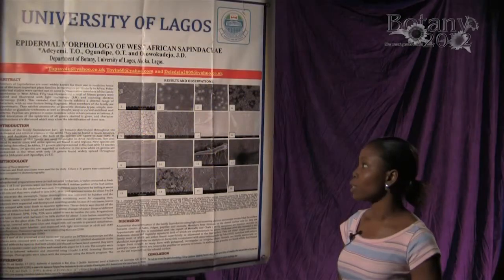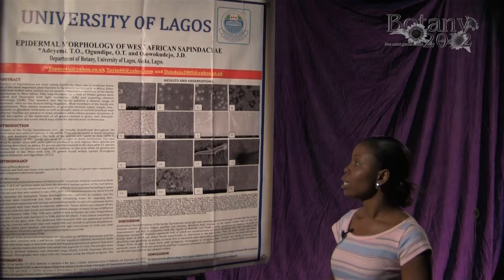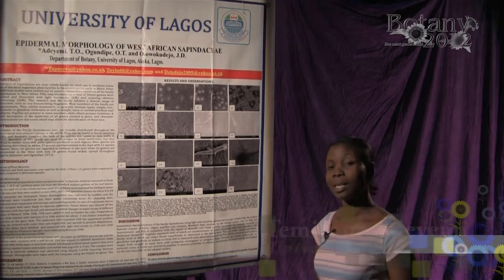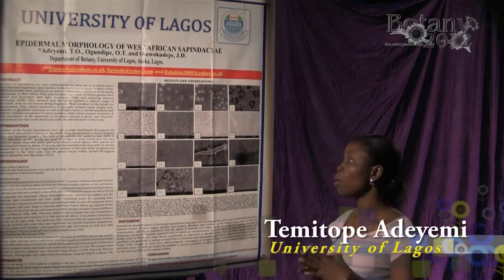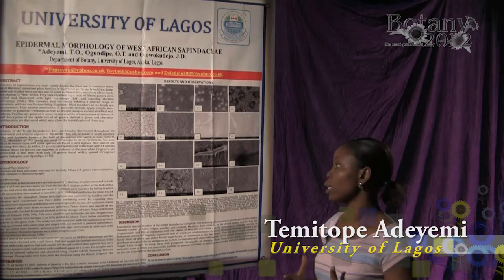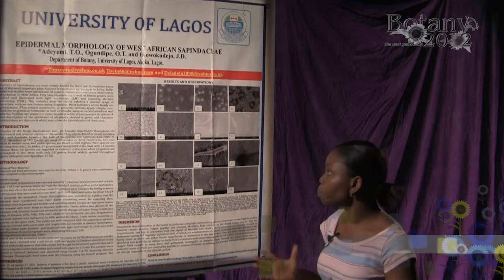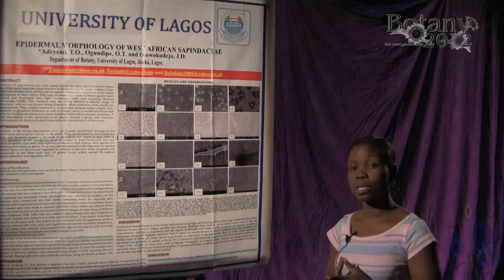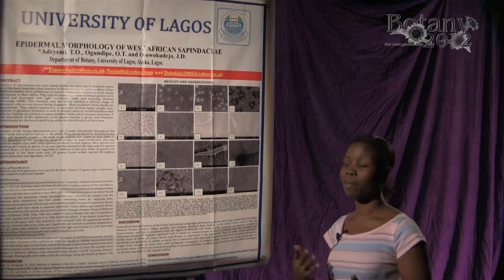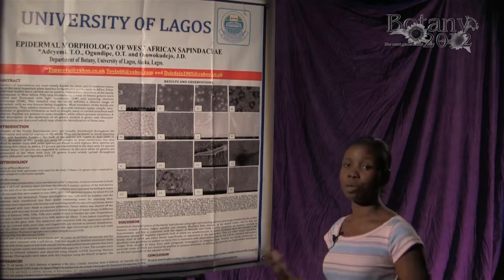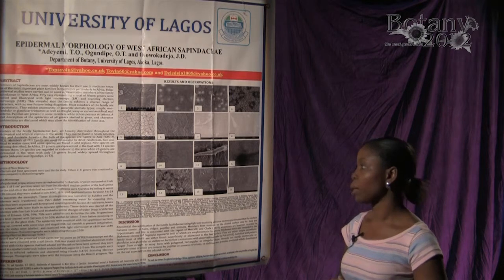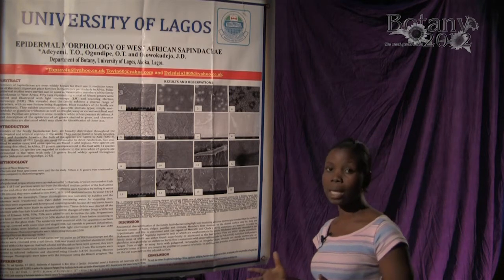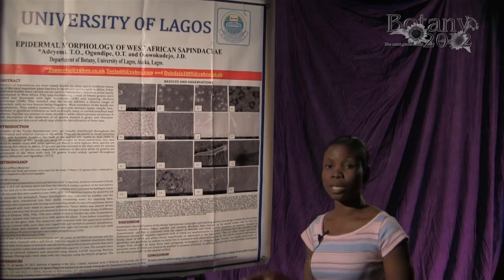I'm here to present Epidermal Morphology of West African Sapindaceae. Sapindaceae are a group of plants in the family Sapindaceae, generally known as soap berry plants, and they are found throughout the tropics. In Africa, we have about 25 genera being represented, and we have 18 of those in Nigeria.